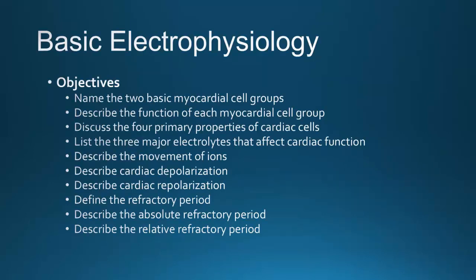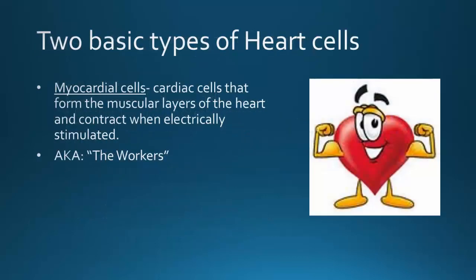In this lecture we're going to learn about the two basic myocardial cell types, the function of the cell groups, the four primary properties of cardiac cells, the major electrolytes that affect cardiac function, the movement of ions, the cardiac depolarization and repolarization cycle, and new terms such as refractory periods — absolute and relative refractory period.